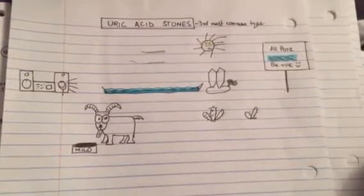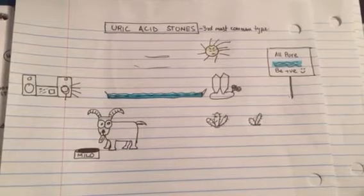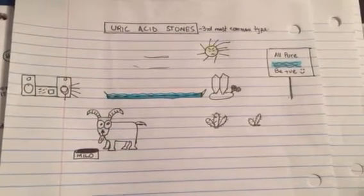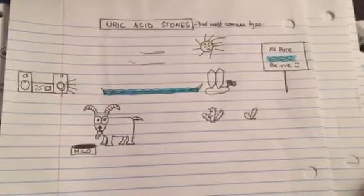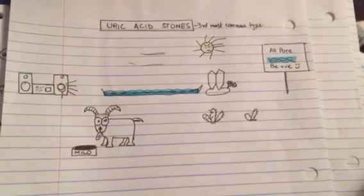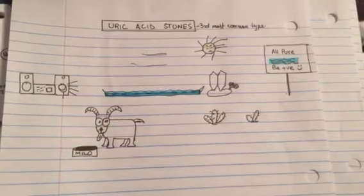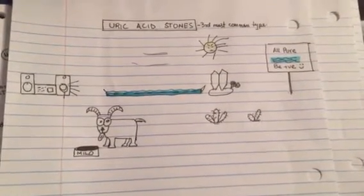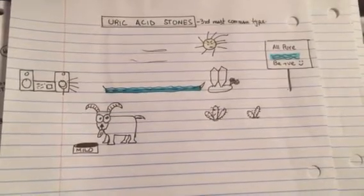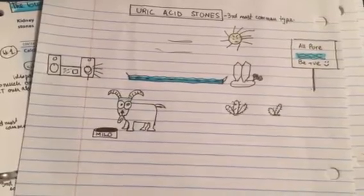Today I've made a mnemonic about uric acid stones in the kidneys. These are the third most common type of stones found in the kidney. The causes of uric acid stones are decreased urinary volume, acidic pH, and dry arid climate.